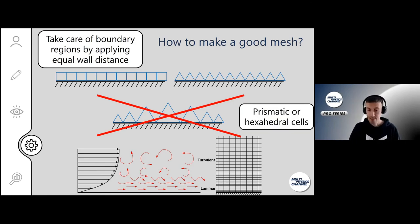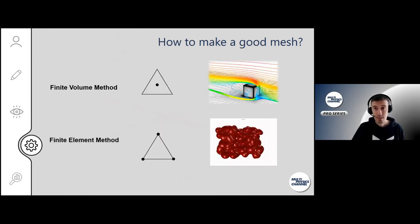These options are available in a lot of meshing software. You need the hexahedral or prismatic cells close to the boundary layer.